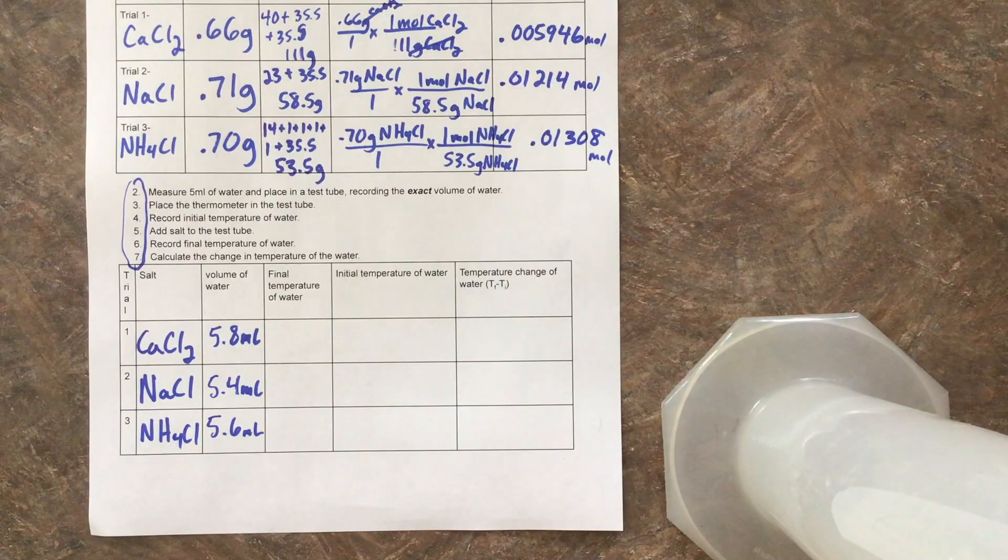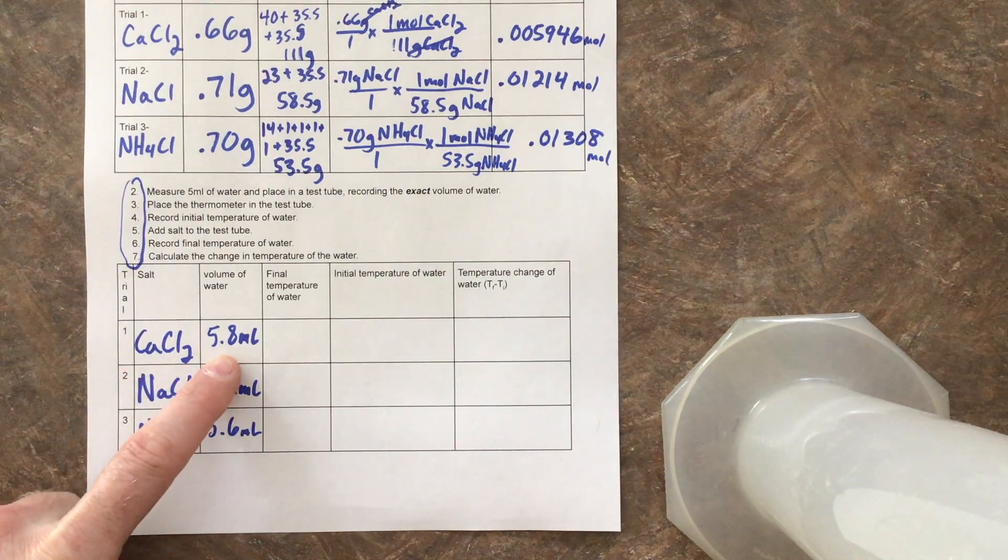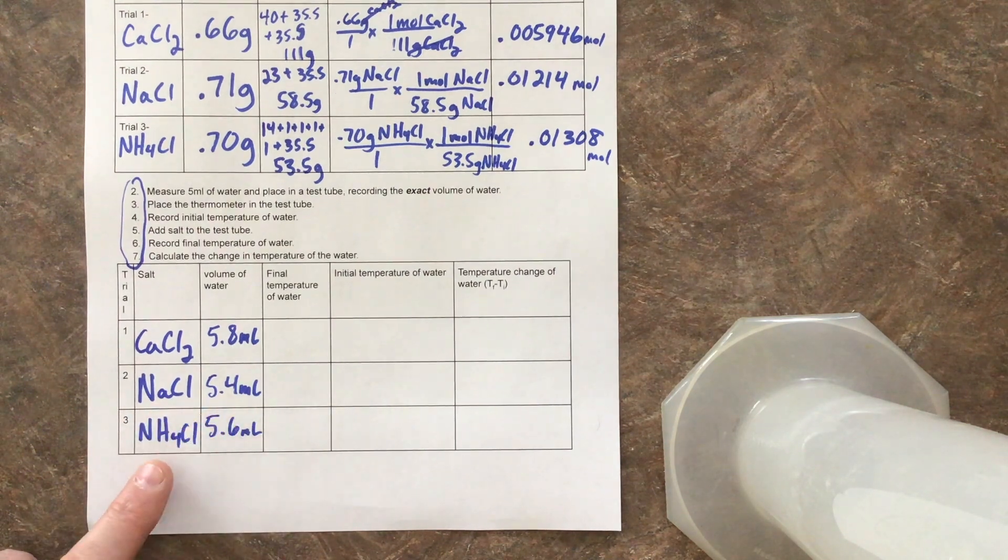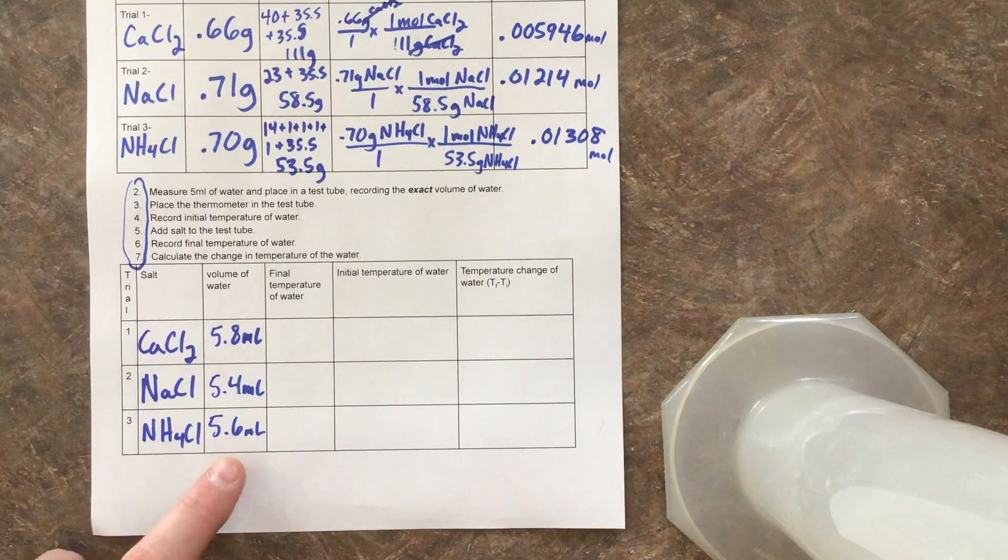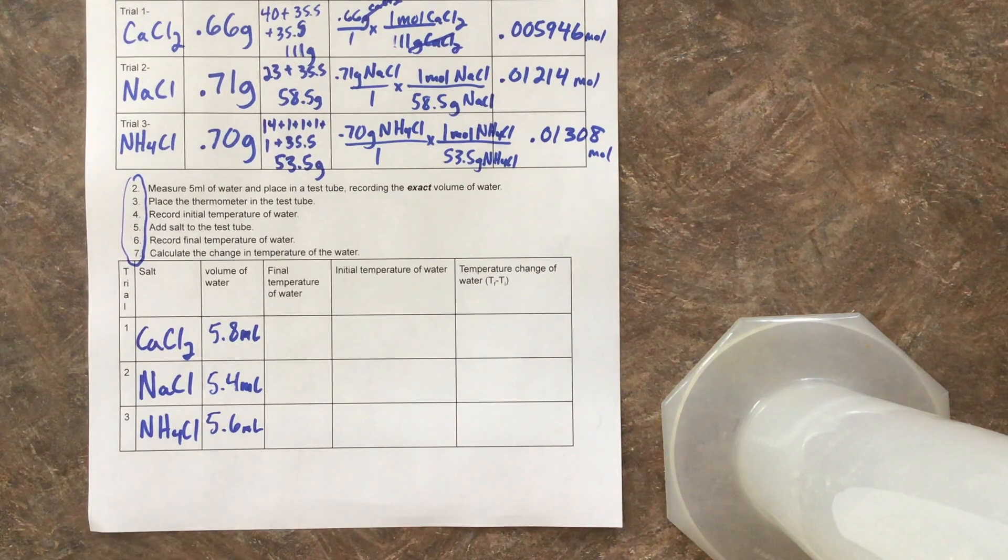You can see how I've got the salts set up. The one on the furthest left, that's going to be our calcium chloride. We have 5.8 milliliters of water for there. Our sodium chloride is in the middle at 5.4 milliliters, and our ammonium chloride is on the right at 5.6 milliliters. Now let's go ahead and check out what is our temperature reading with the thermometers.